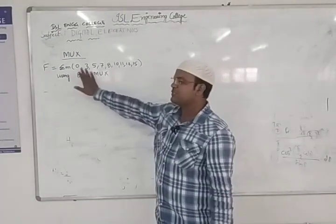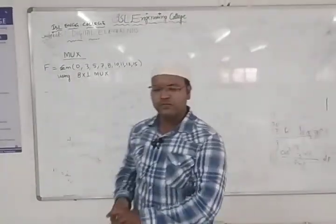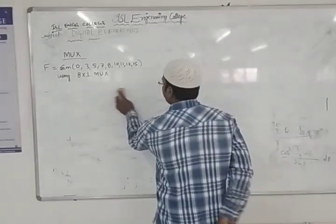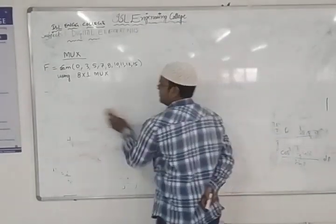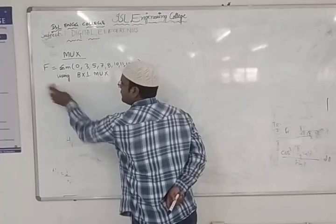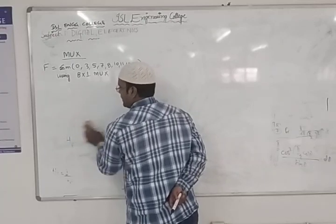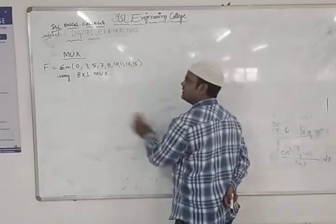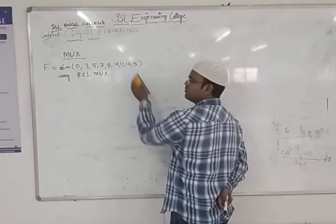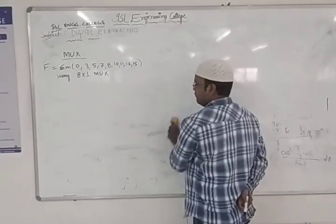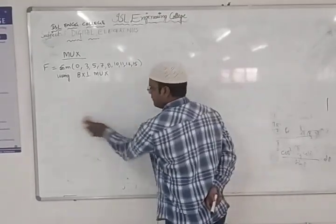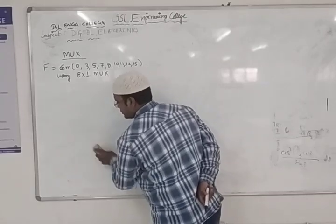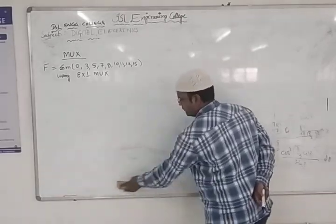Given these minterms, the first thing we need to do is write down the truth table. We take four variables because the values are ranging from 0 to 15, and 0 to 15 falls under four variables. So first we take four variables, draw the truth table, then design the 8-to-1 multiplexer.